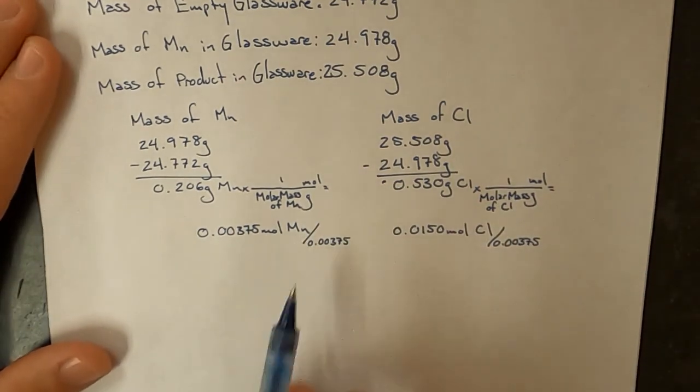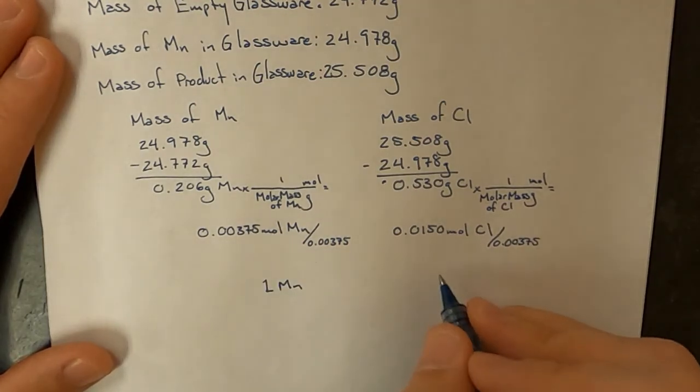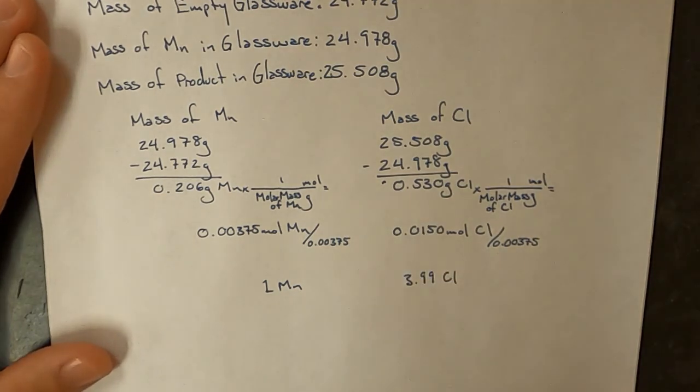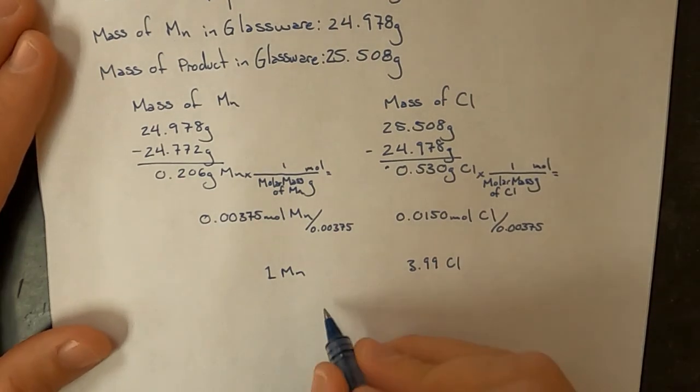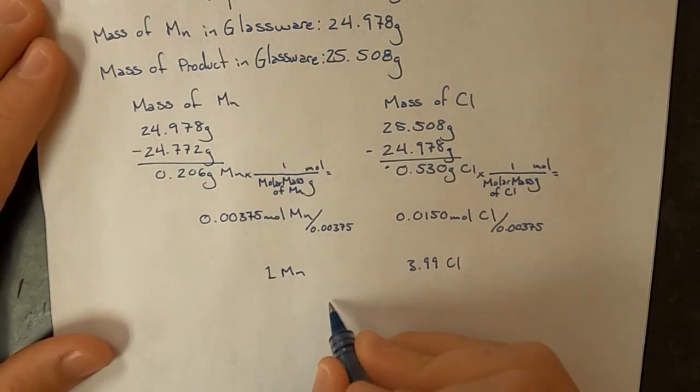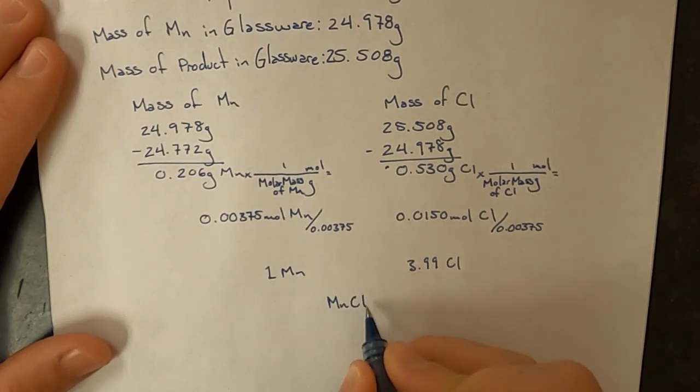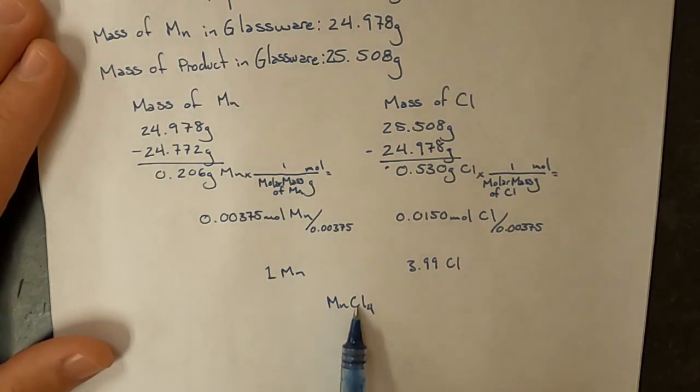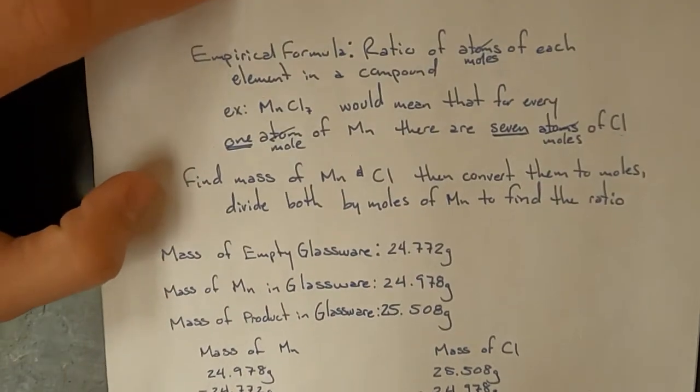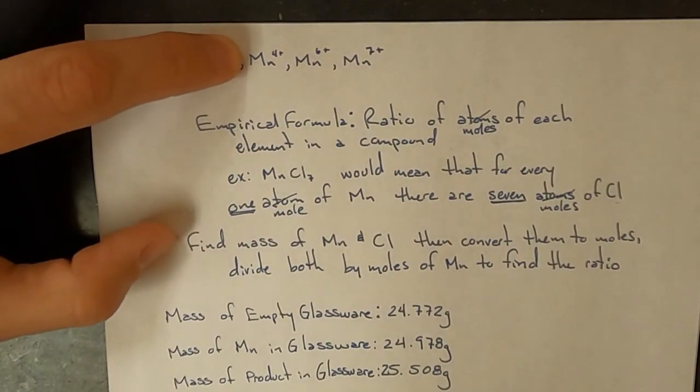And so it would be 1 manganese and 3.99 chlorine. Now the subscripts in a formula are whole numbers, and so this is very close to 4. So my formula for manganese chloride that I produced would be MnCl4. Because chlorine has a 1- charge, I've got 4 of these, so I calculated that it is the manganese 4+ ion that was produced, the manganese +4 oxidation state.